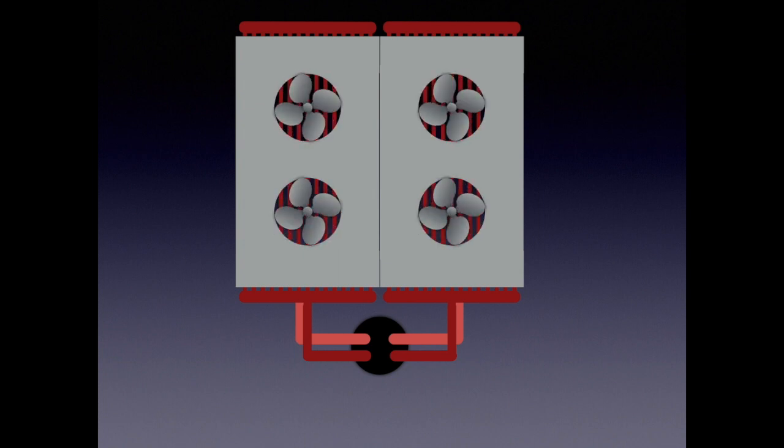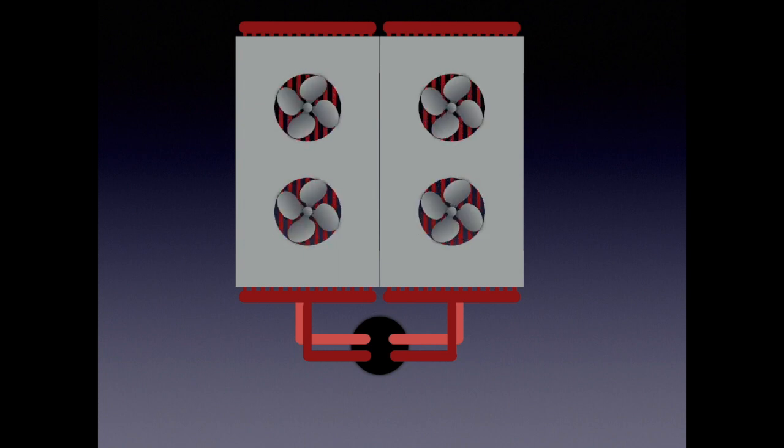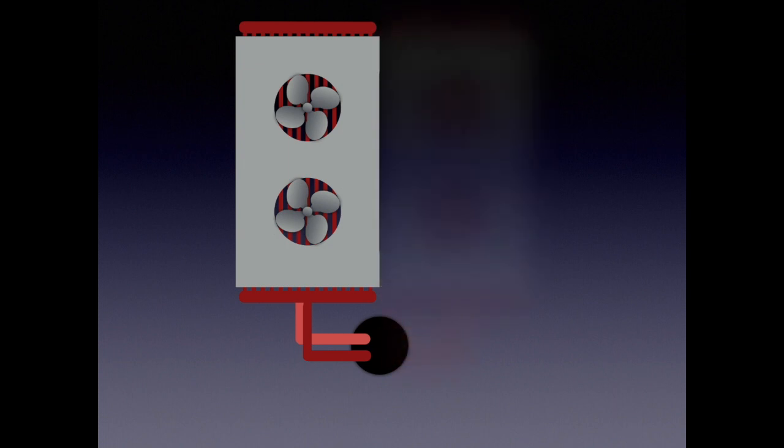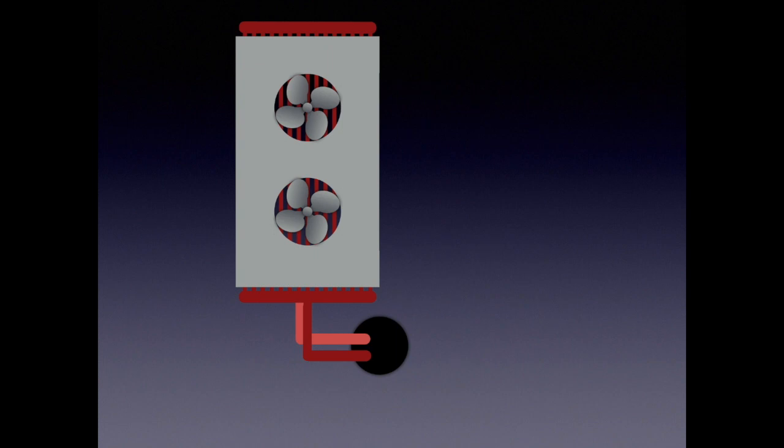100% hot vapor goes into the condenser and comes out 100% sub-cooled liquid into the condensate lines and back down to the rack room. Now when we go into split condenser and we do shut that valve, this is what we're doing. We're taking away half of that condenser.